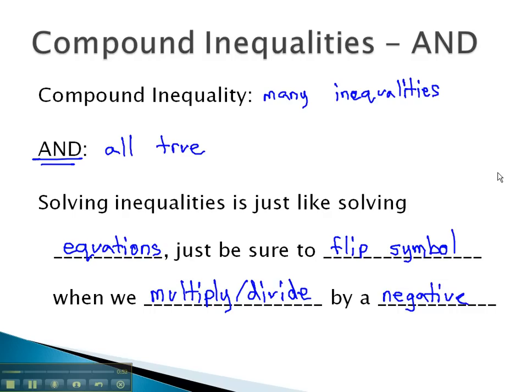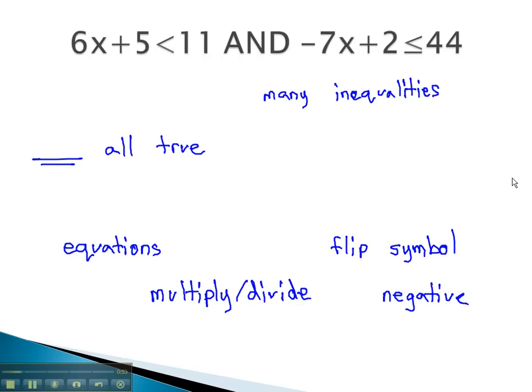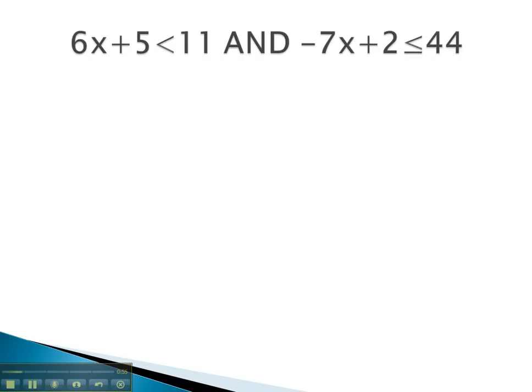Let's take a look at some examples where we can see these inequalities worked out. In this problem, we see AND as connecting two inequalities. We can solve them individually. The first, by subtracting 5 from both sides gives us 6x is less than 6, and finally dividing by 6 gives us x is less than 1.